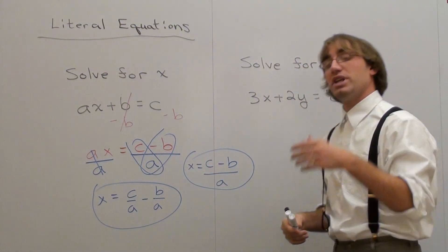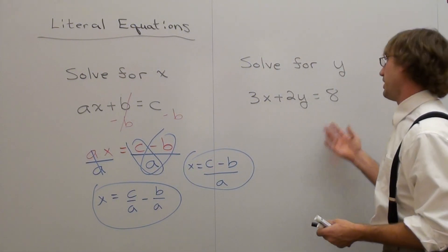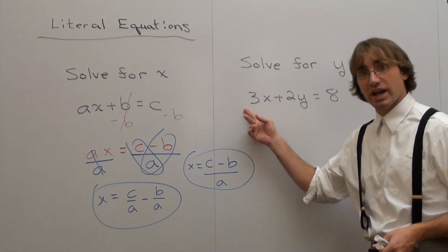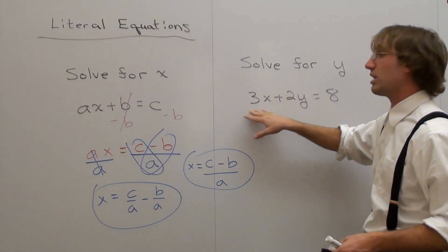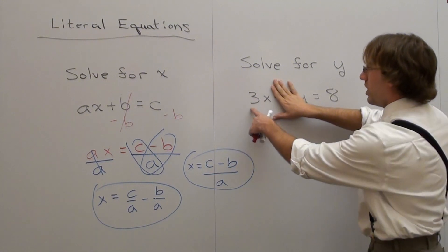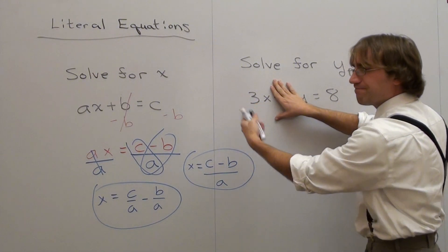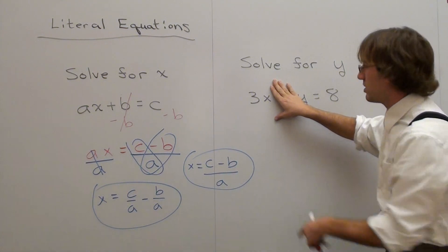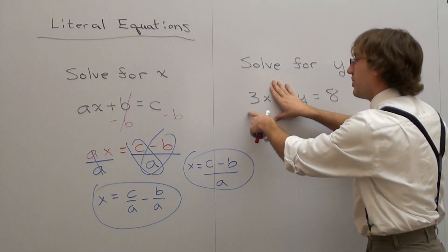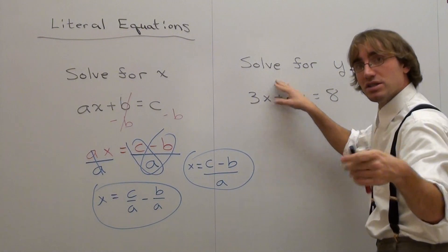This one you want to solve for y, so you want to get y by itself. Okay, y has a 2 and has a 3x there. We're not going to get rid of the 2 yet, we're going to get rid of the 3x. I'm not looking at that. What is that? It doesn't have a plus or a minus in front of it, so we automatically assume it's positive. How do we get rid of a positive 3x? We subtract 3x.